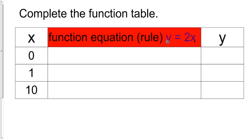I can figure out what my output is by taking the input and timesing it by two. So here's how we would show the work. Y equals two times my input. In this case it's zero. So two times zero is zero.